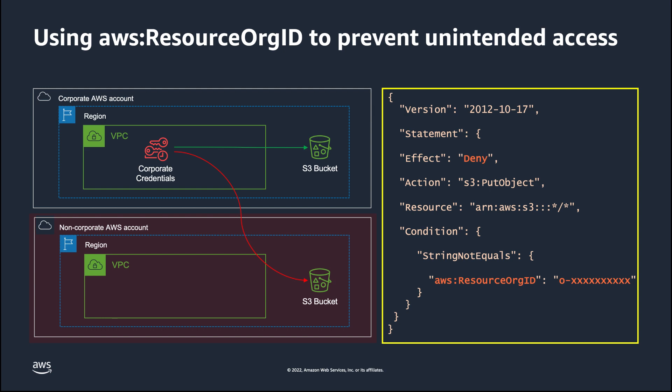With this policy in place, when a principal in your organization tries to write to an S3 bucket, AWS verifies if the value of the condition key matches the organization ID of the S3 bucket being accessed. And if those values do not match, the access will be explicitly denied by this policy. You can apply this policy to any principal in your organization or to your entire organization using Service Control Policies, SCPs. By attaching this policy as an SCP, permissions automatically apply as your organization scales and you add more principals to your AWS environment. This establishes a data perimeter around all principals in your organization and allows you to maintain central access control while giving developers the ability to innovate and move fast.